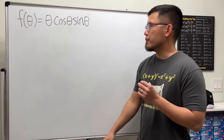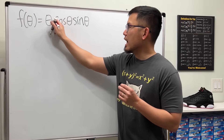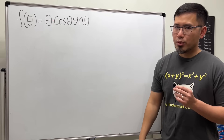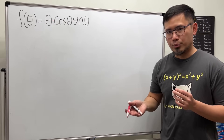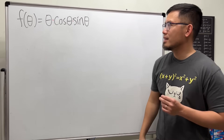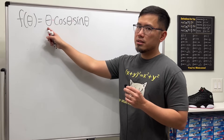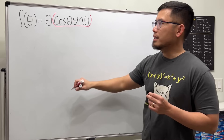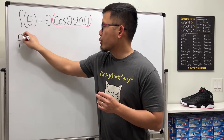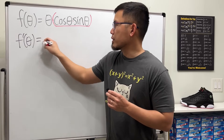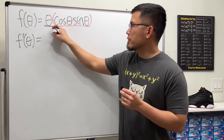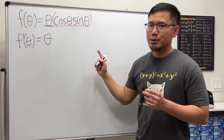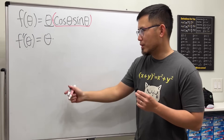Now for the second question, we will differentiate theta times cosine theta times sine theta. This is the product of three functions. We still use the product rule, but twice. What we can do is take theta as the first function and then group cosine theta times sine theta as the second function. I will use f prime of theta for the derivative notation, keeping the first function theta, times the derivative of the grouped second part — but that requires the product rule, so let me work that out.